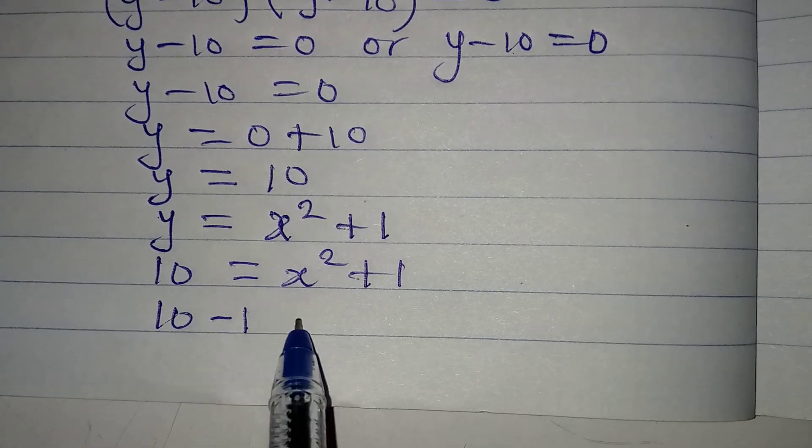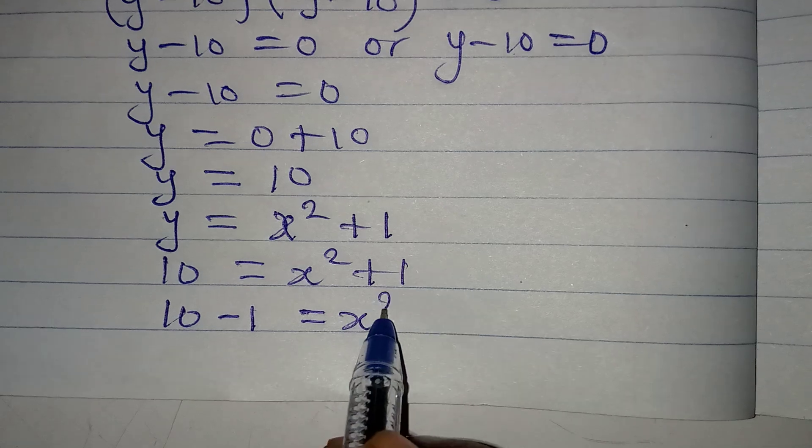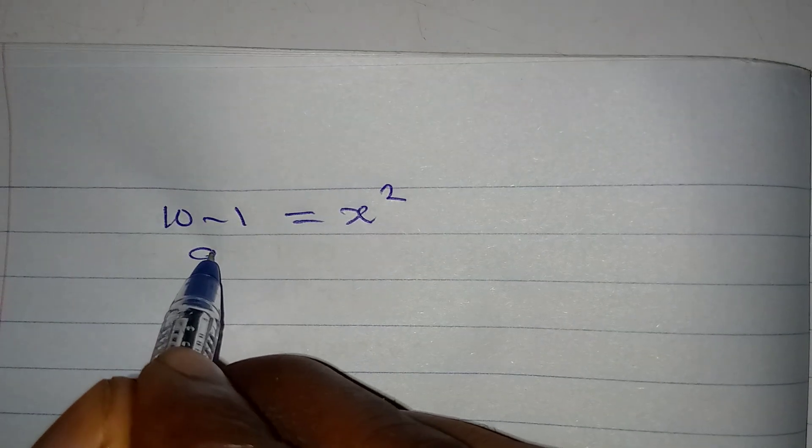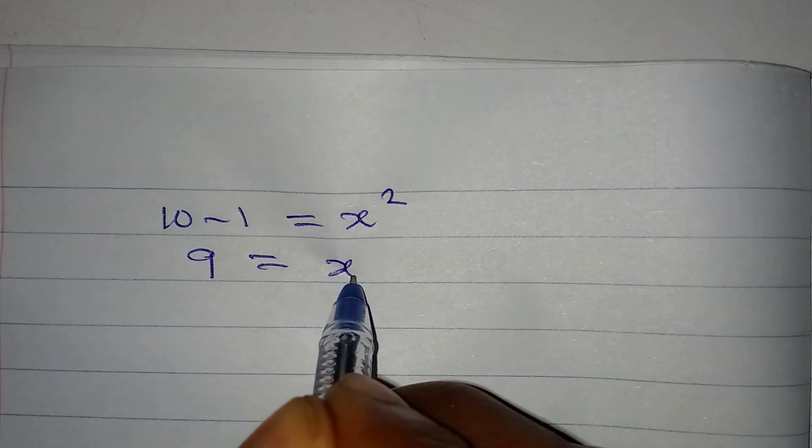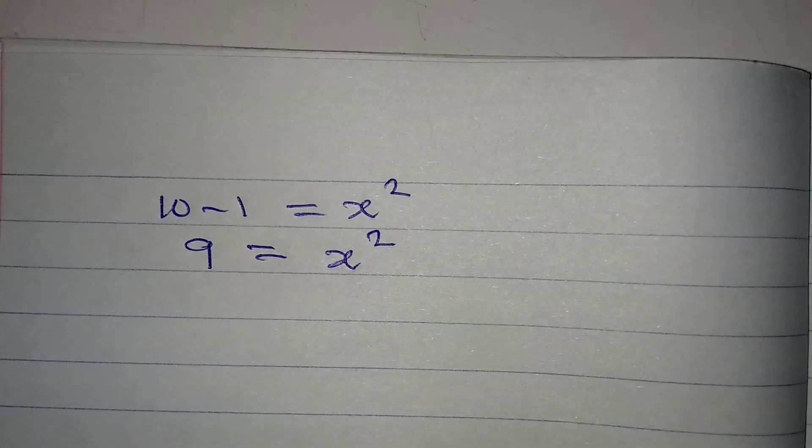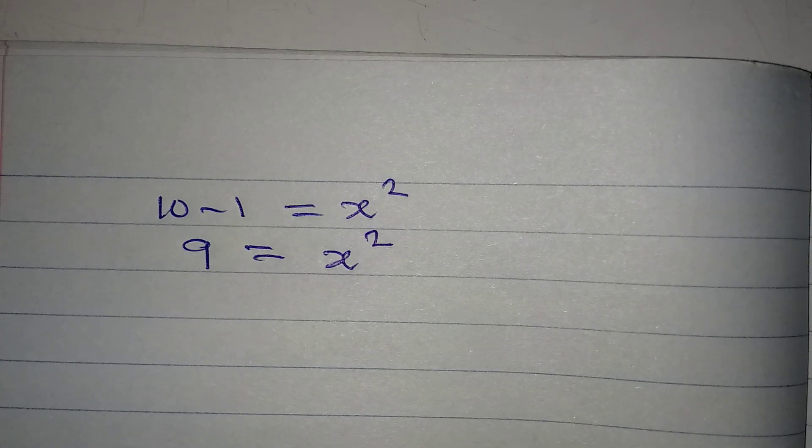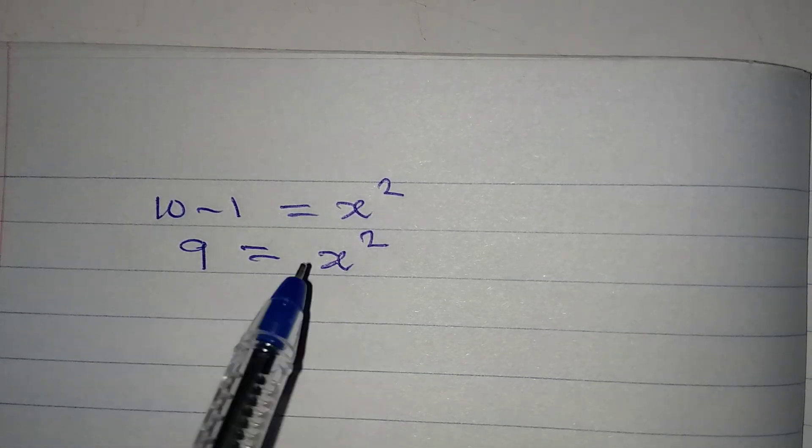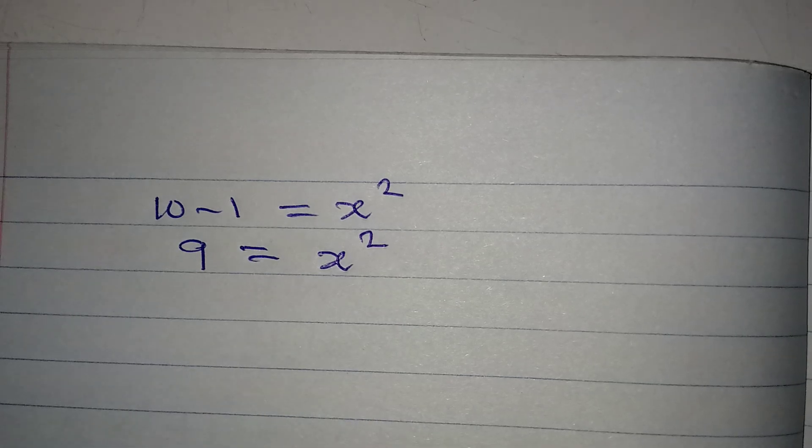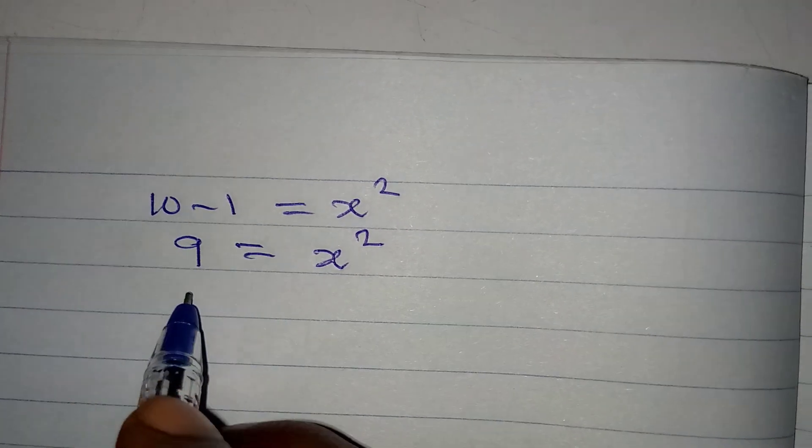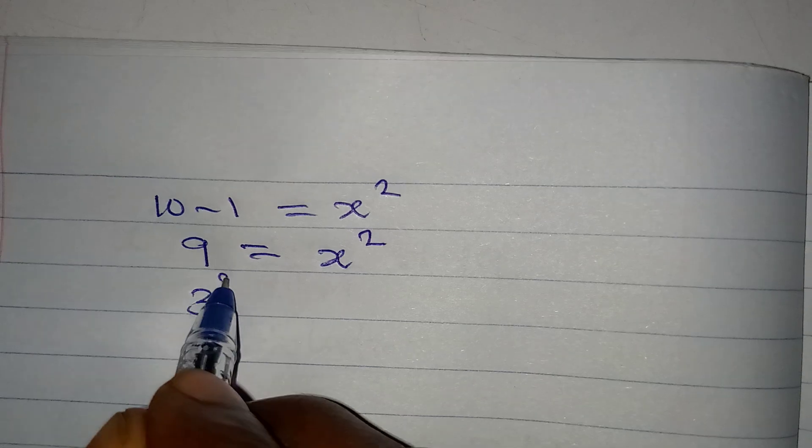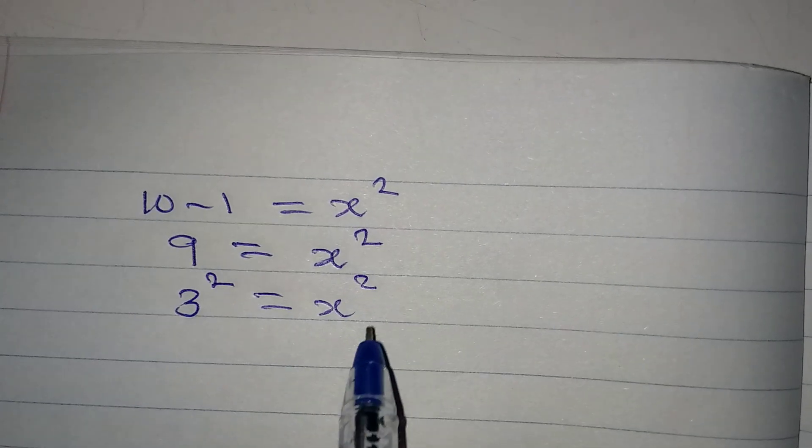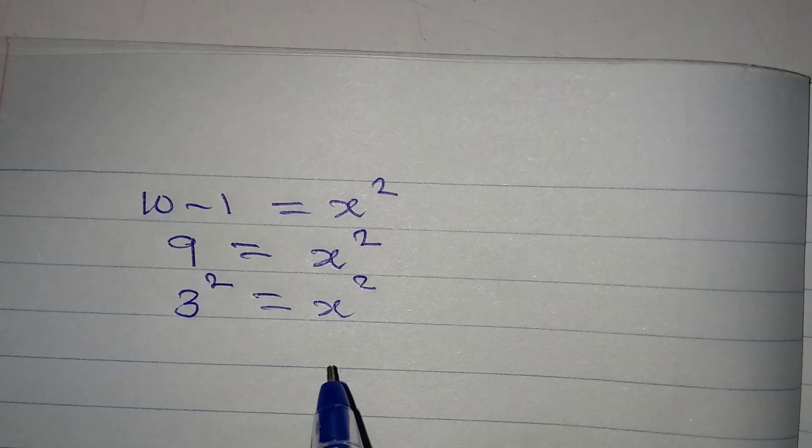If I collect like terms, I have 10 minus 1. It should be equal to x squared. So this means that 9 will be equal to x squared. And what we should do is to make sure that the powers are the same so that the bases will also be equal. 9 is 3 squared, which will be equal to x squared.